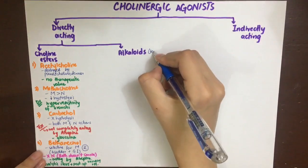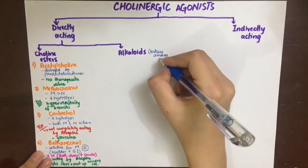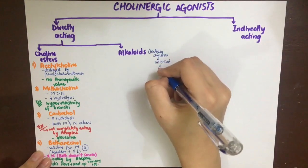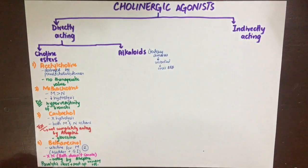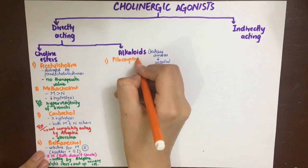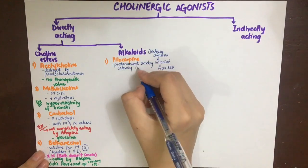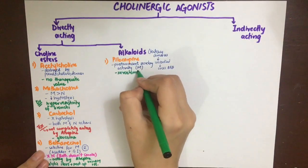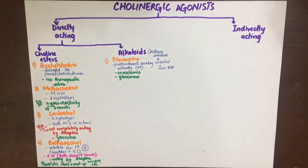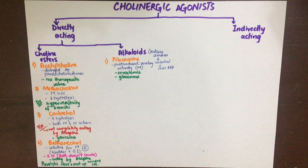The alkaloids are tertiary amines, meaning the nitrogen is completely bound by three functional groups and is thus unionized. That's why they can cross the blood-brain barrier. The first alkaloid is pilocarpine. It has predominant secretory activity and is mainly used as a sialogogue in xerostomia and in glaucoma. Its use in glaucoma is due to its action on M3 receptors in the sphincter pupillae and ciliary muscles, contracting both and causing drainage of aqueous humor, decreasing intraocular pressure.